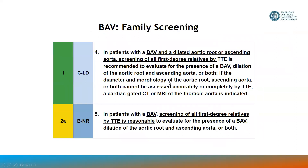It's also important to screen family members. While bicuspid valve is present in 1% of the population, in family members of the proband with bicuspid valve it's recognized to be more common. A class 2A recommendation — meaning it's reasonable — is to screen all first-degree relatives of the individual with a bicuspid aortic valve to evaluate for the presence of a bicuspid valve and for dilatation of the aortic root, ascending aorta, or both.